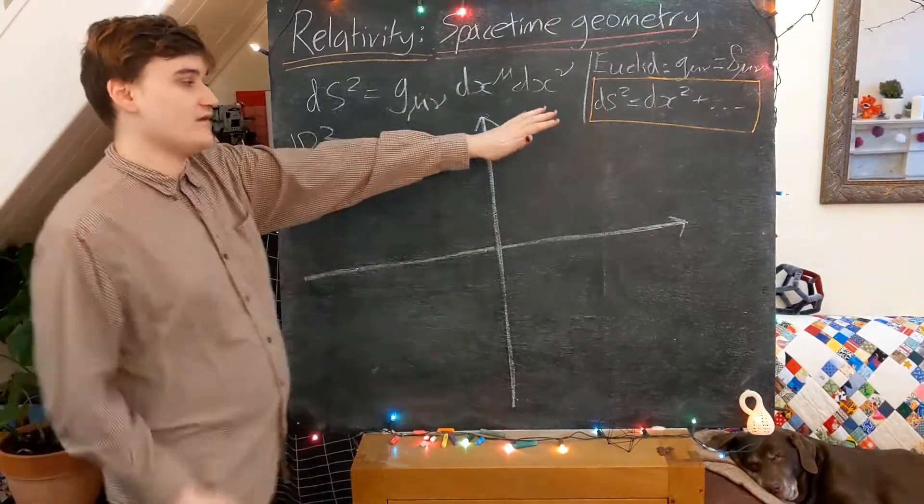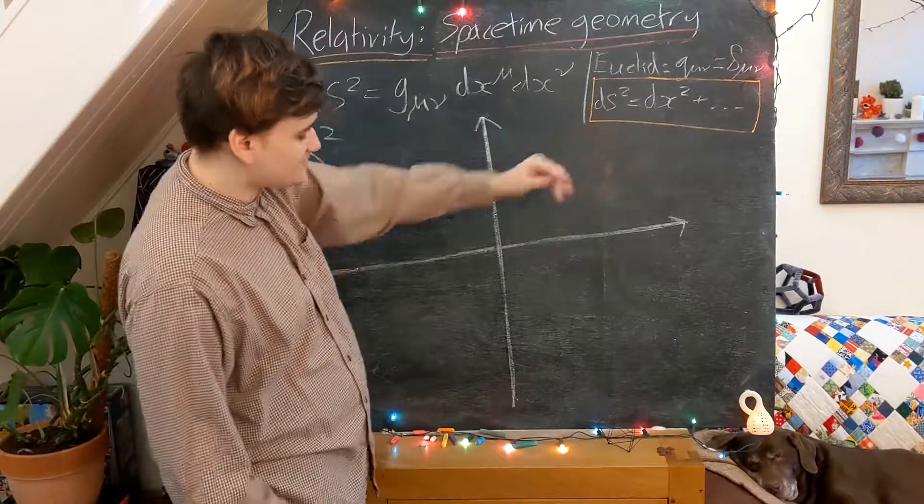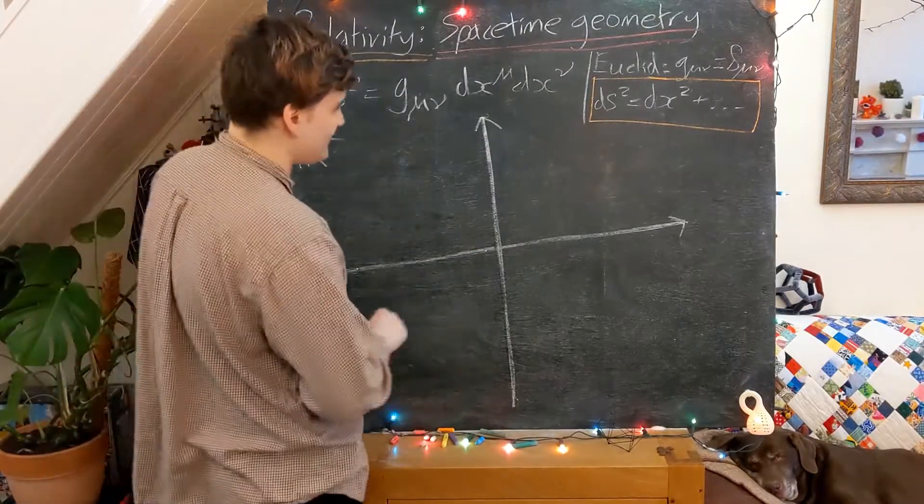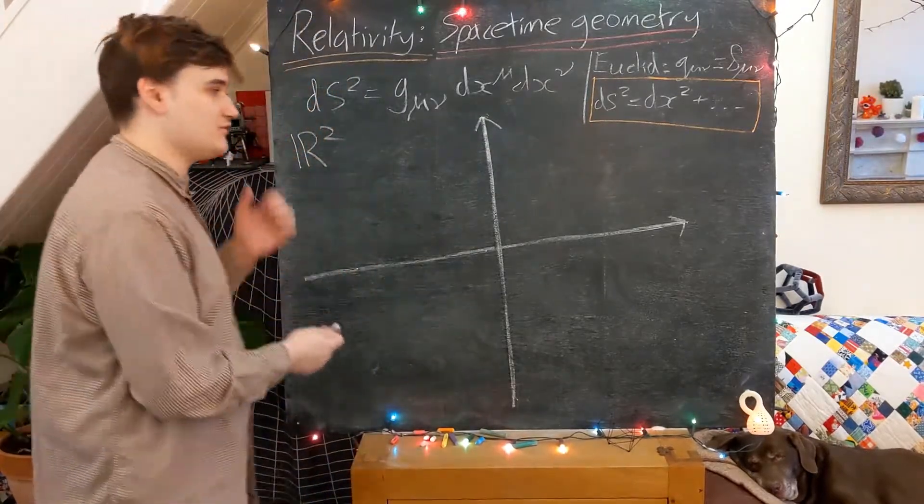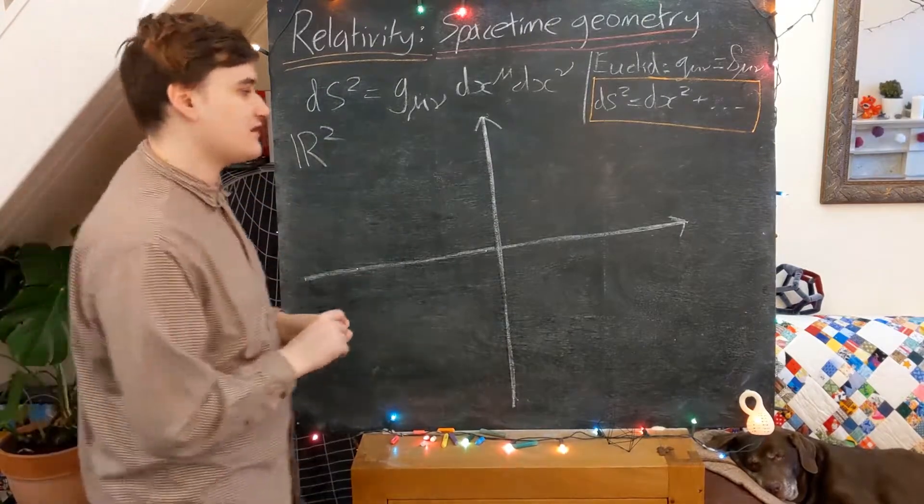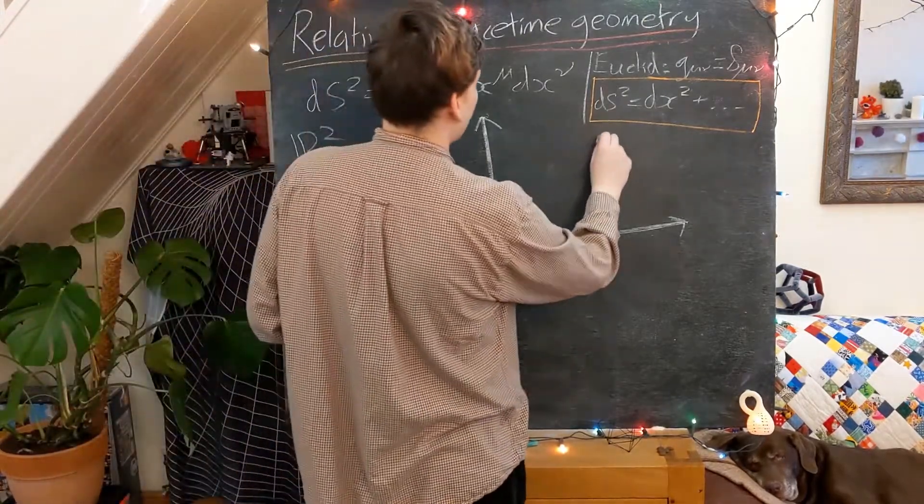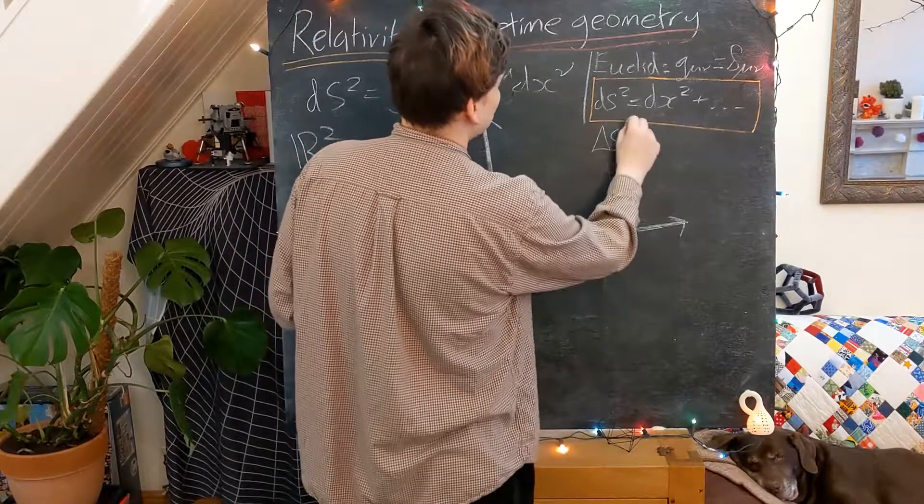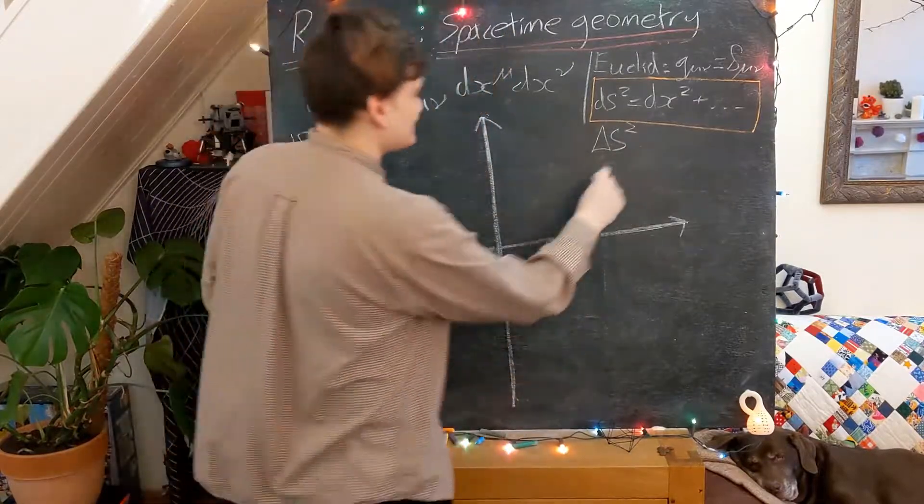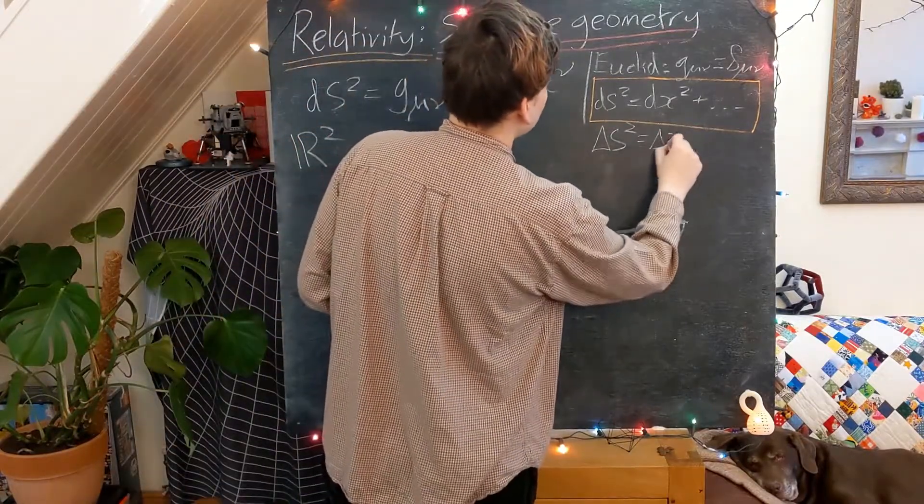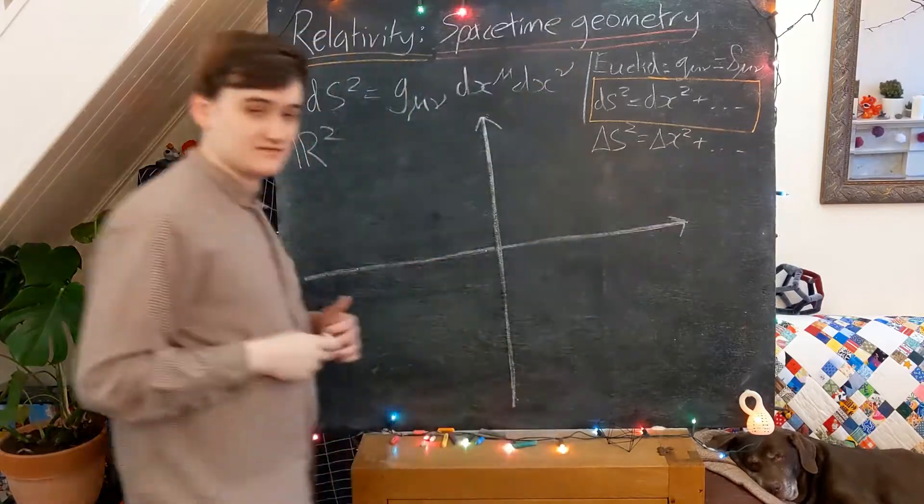We're essentially going to, first of all, not consider the infinitesimal version of the line element, we're going to consider the finite, or essentially if you like, the integrated version of the line element, essentially the delta s squared version, which is essentially here just going to be delta x squared and so on.